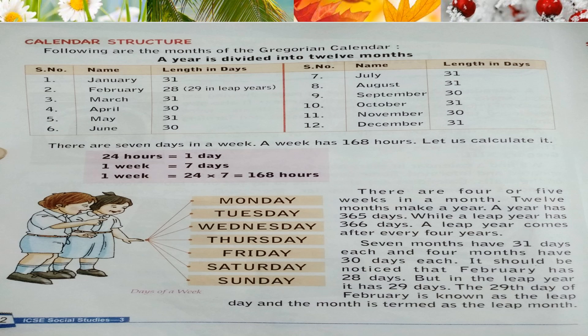July has 31 days. August has 31 days. September has 30 days. October has 31 days. November has 30 days. December has 31 days.